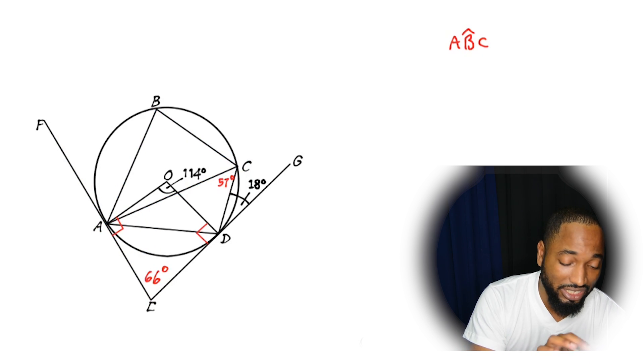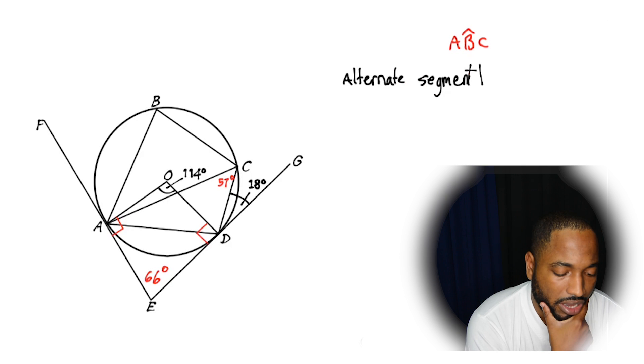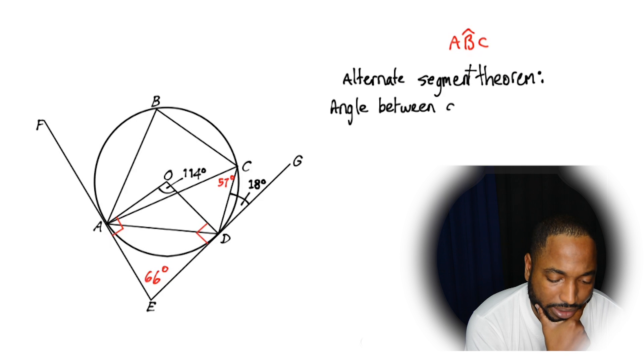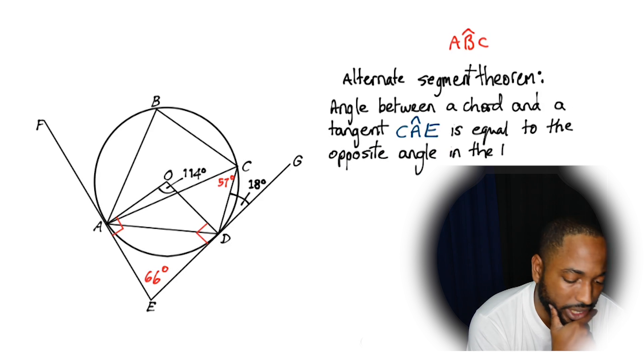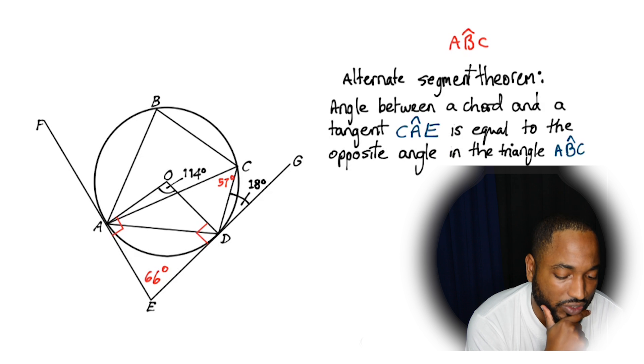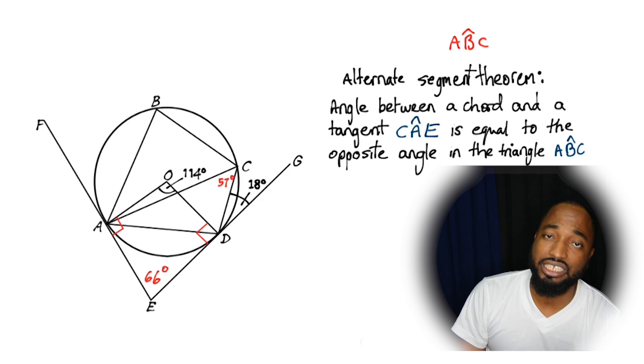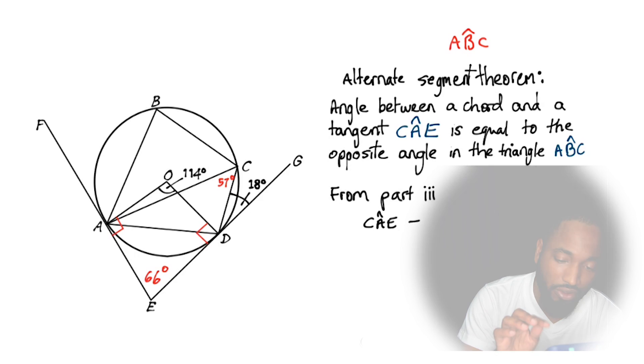Again, this theorem is very powerful. Alternate segment theorem. Angle between a chord and a tangent CAE, so that's the angle we're looking at is equal to the opposite angle in the triangle. We already know CAE. CAE is sum of the two angles that we found earlier. From part three, CAE is 57 plus 18. So angle ABC is going to be the same 75. And that's a wrap.